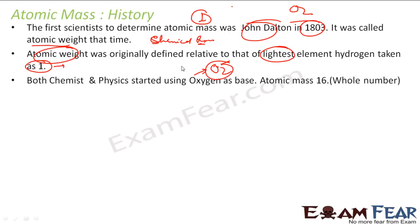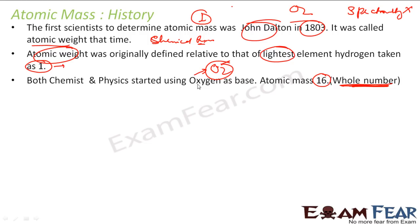The atomic mass of oxygen was taken to be 16 as the base, because it gives a whole number. They were looking for whole numbers. At this point, mass spectrometry was not yet available, so both chemists and physicists started using oxygen, since it was pretty reactive and chemists could use it for reactions.